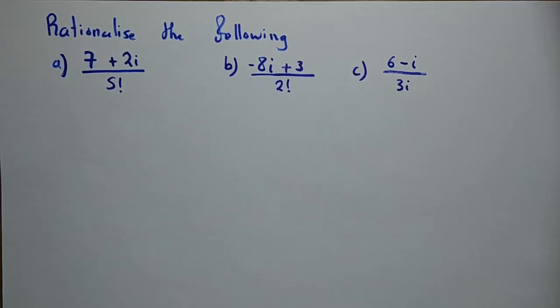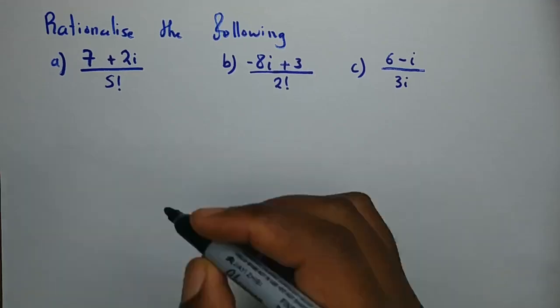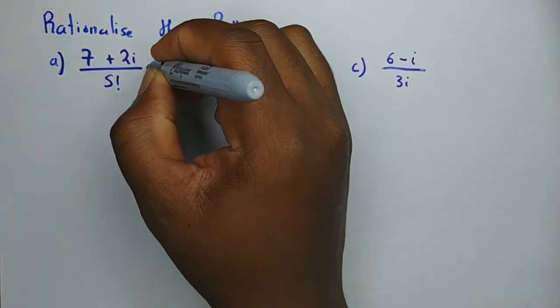To rationalize, we have to multiply both the numerator and the denominator by the denominator. Sometimes they might specify to rationalize the numerator, meaning you multiply both by the numerator, but if they just say rationalize, we multiply both numerator and denominator by the denominator.